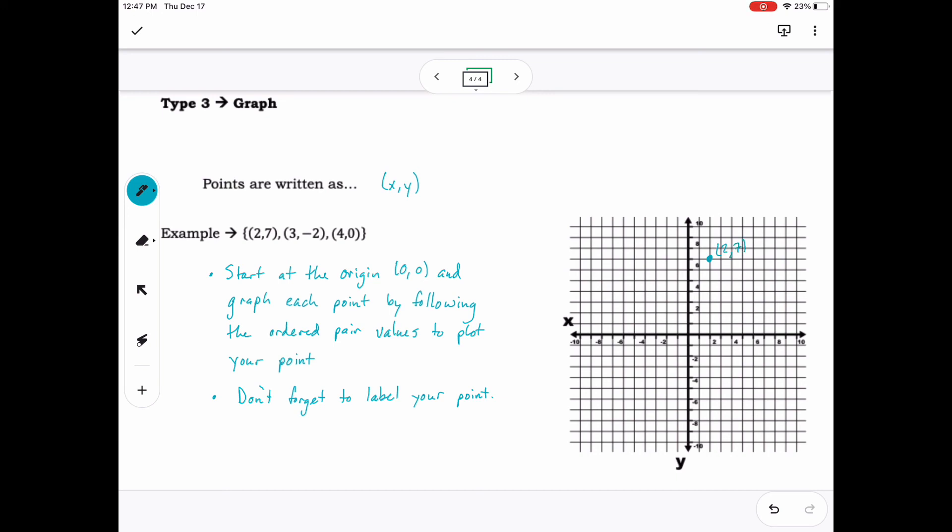For the point 3 comma negative 2, 3 is our x value this time. Start at the origin and go right 3 because 3 is positive. Then from there, go down 2 because 2 is negative. Plot and label your point.